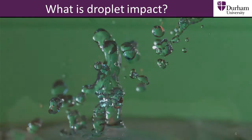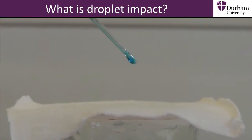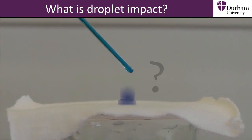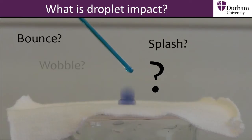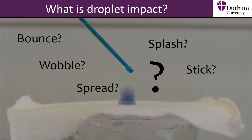There are many different things that can happen when a water droplet hits the surface. The drop can bounce, splash, wobble, stick, or just spread out in an instant. What we want to know is why droplet impact varies for different surfaces and how the different types of impact are used.